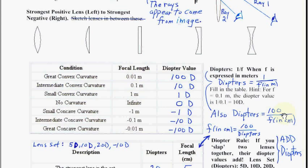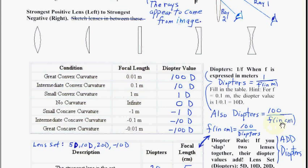Another equivalent definition for diopters is to divide the focal length into 100, where the focal length is in centimeters, and you get the same result. For example, the top case: 1/0.01 in meters is like 100 divided by 1 centimeter — how many pennies in a dollar — still 100. It's neat to have both formulas.